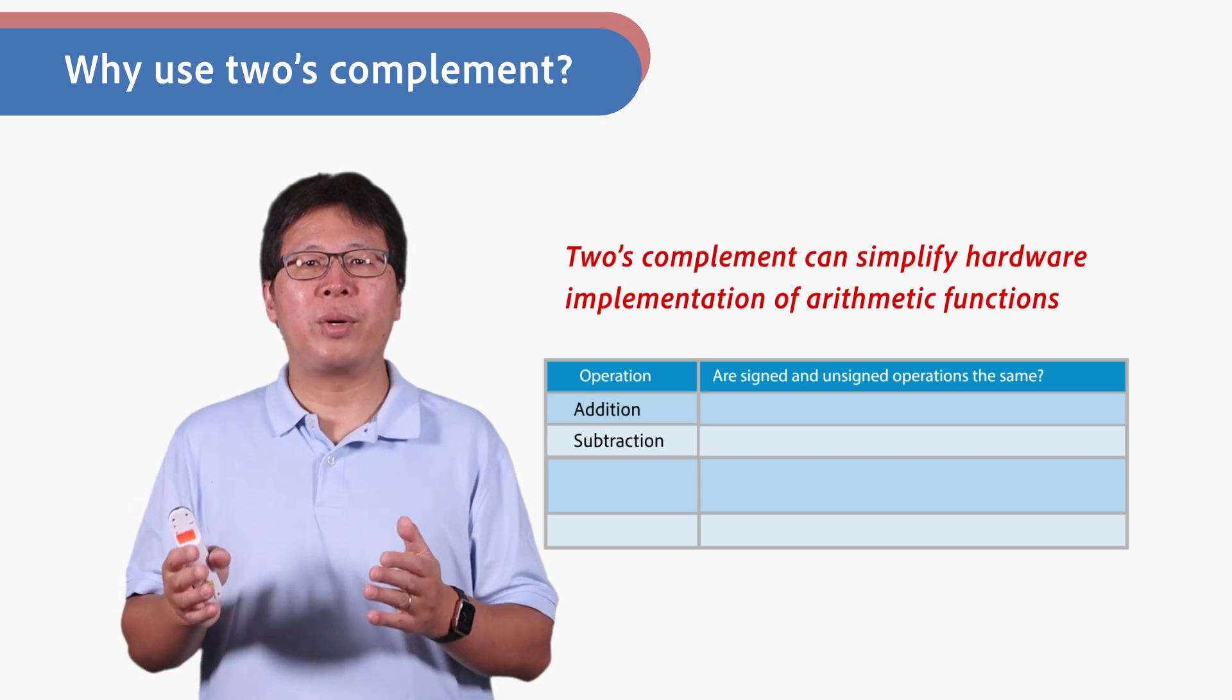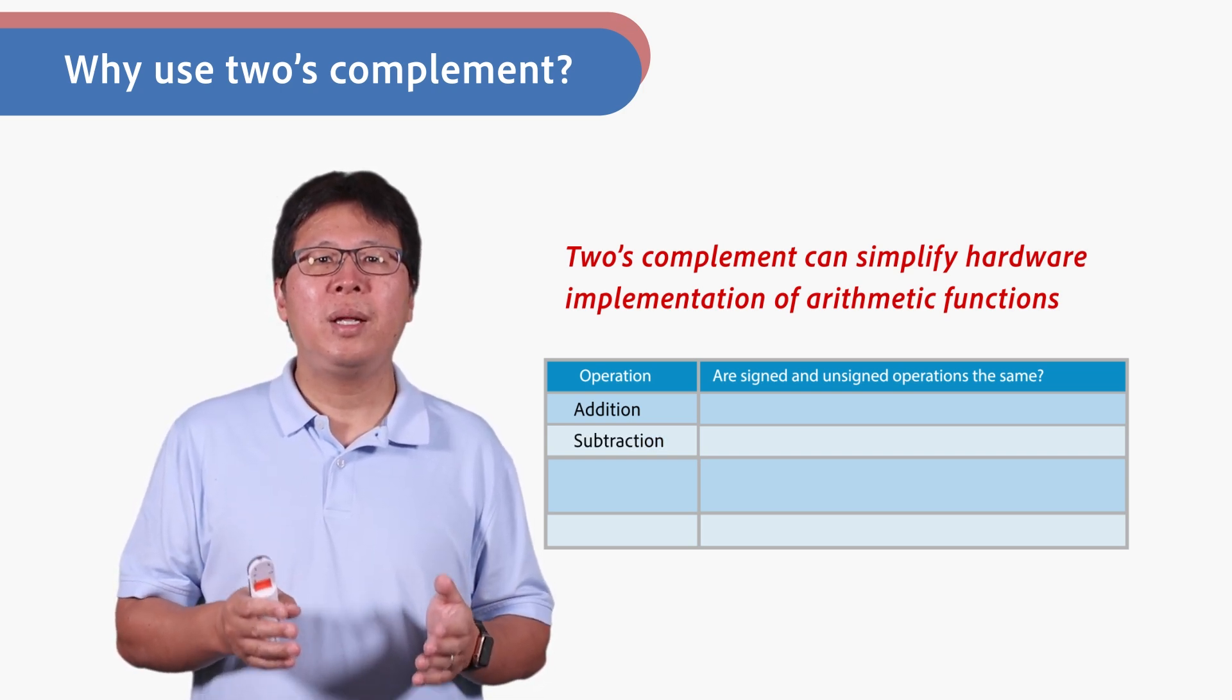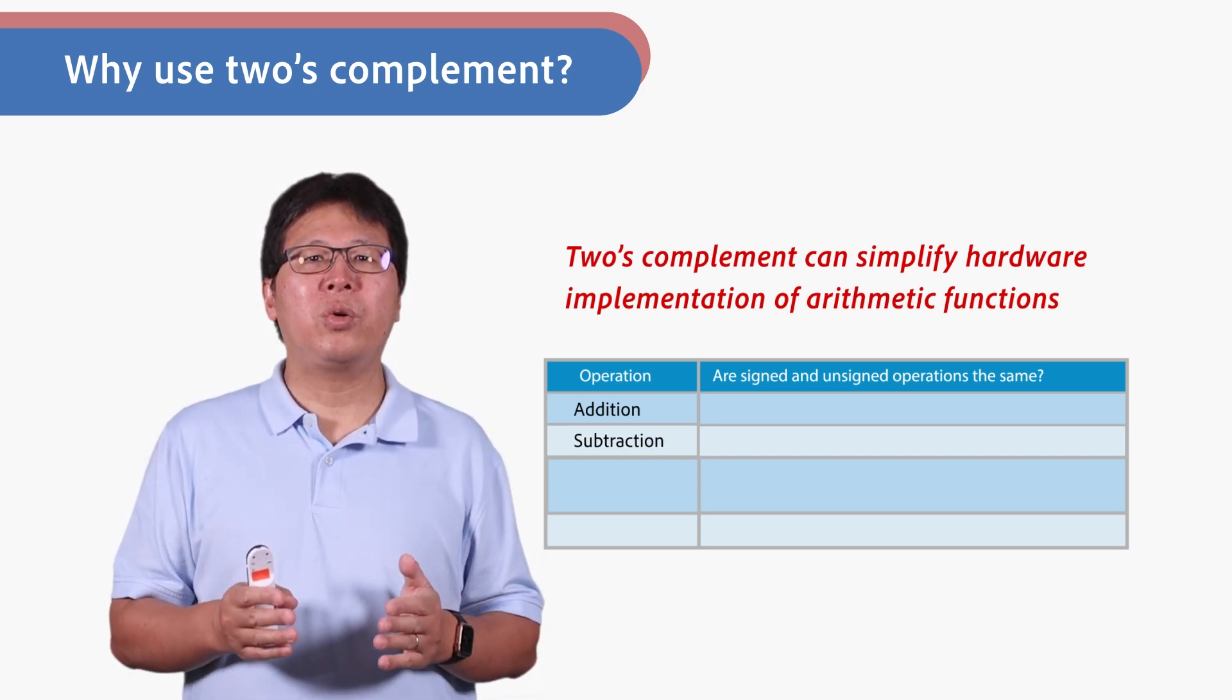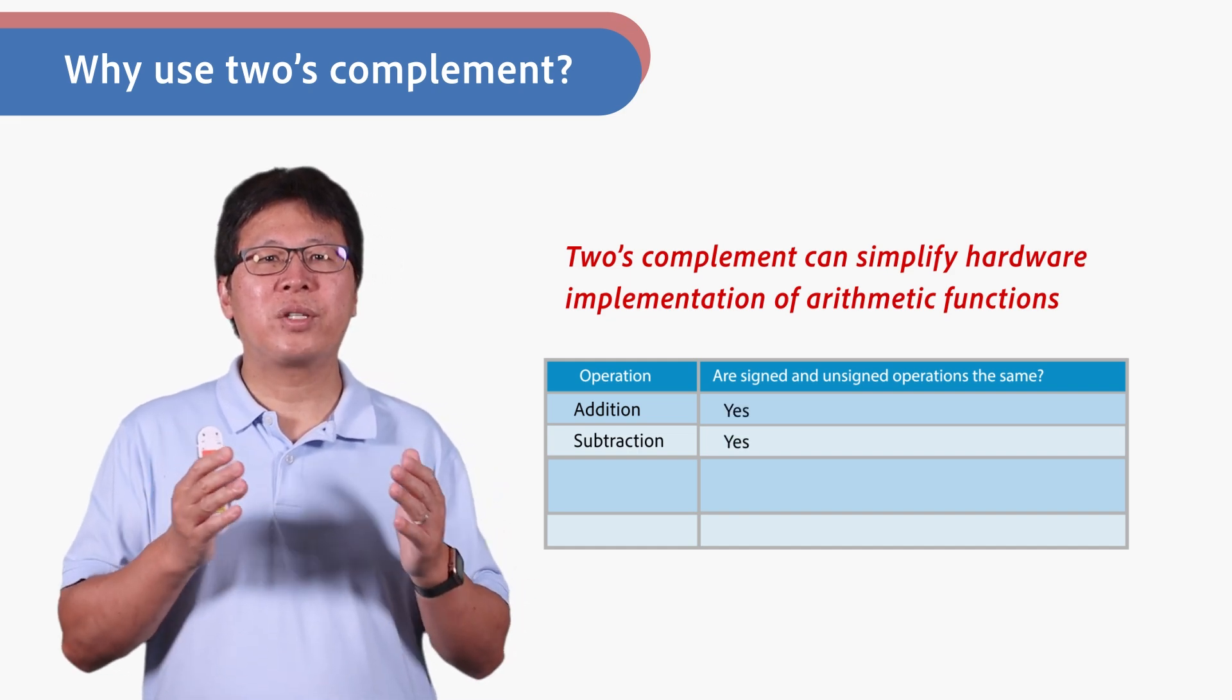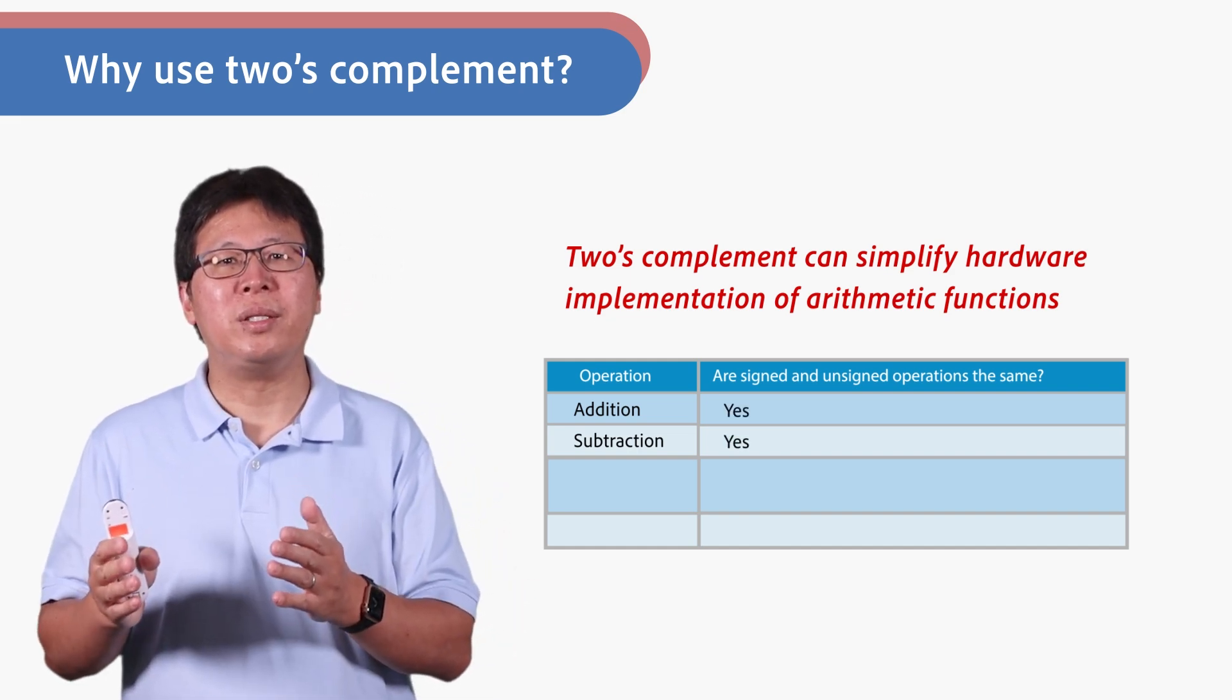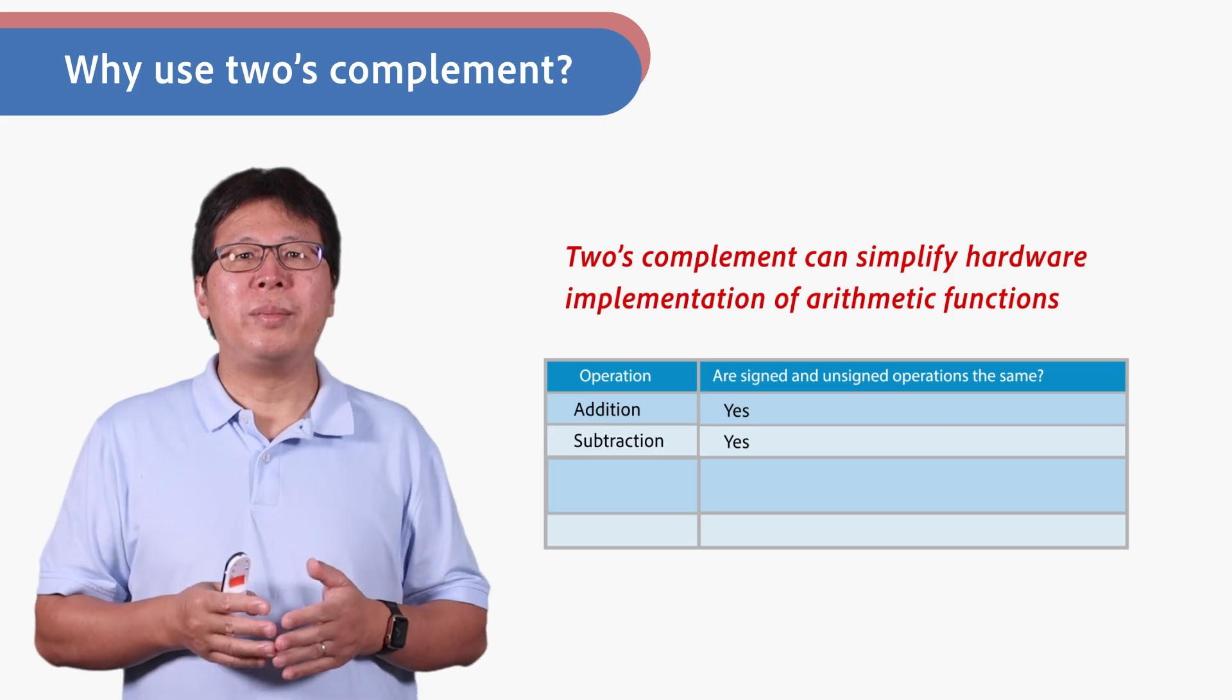For addition or subtraction in two's complement, the hardware can ignore the sign of operands if signed integers are represented in two's complement.